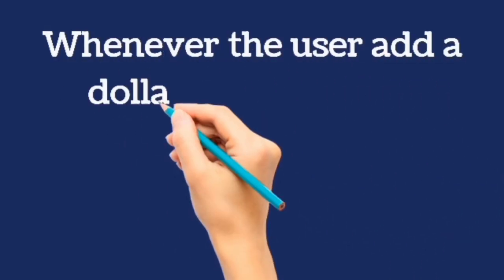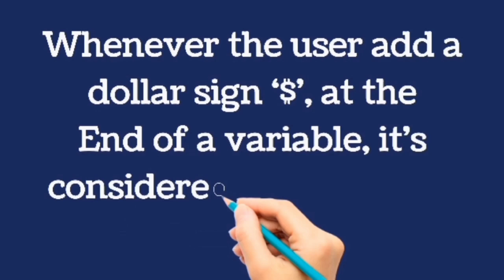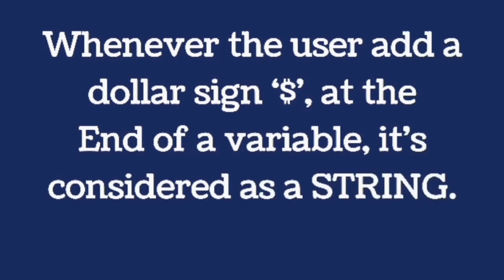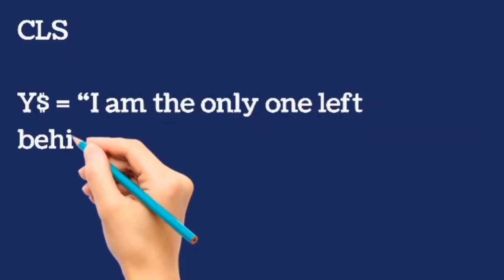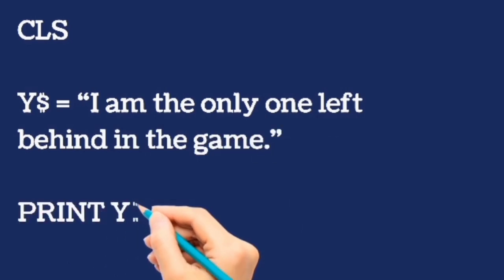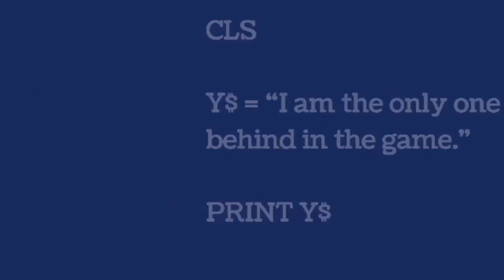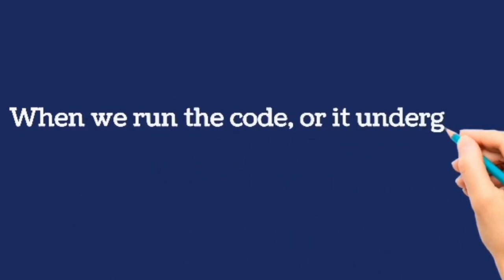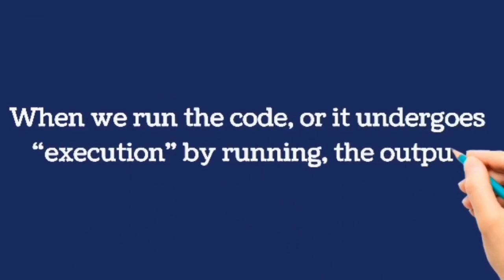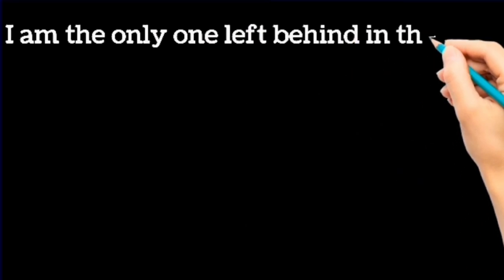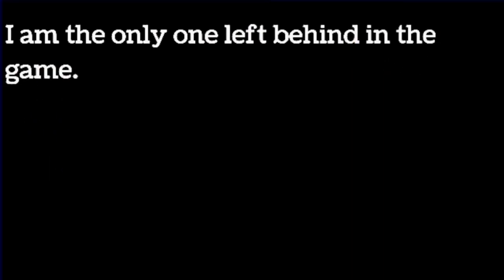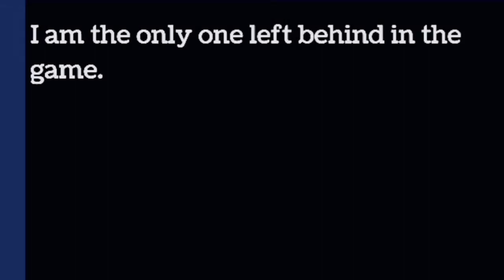Strings 2 or strings. Whenever the user adds a dollar sign at the end of a variable, it's considered as a string. My dollar sign is having two vertical bars and is accepted everywhere. Let's clear our string. Y string is equal to I am the only one left behind in the game. Print Y string. When we run the code or it undergoes execution, the output will be I am the only one left behind in the game on our black screen. When it undergoes execution, make it a point. The CLS stands for clear screen.